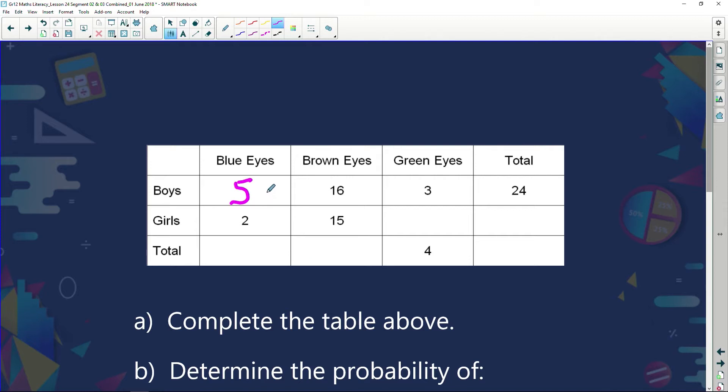At this column here we got 5 boys who got blue eyes, 2 girls—that gives me a total of 7 of the students that we looked at had blue eyes. Over here, brown eyes: 16 boys had brown eyes, 15 girls had brown eyes, a total of 31 had brown eyes. Green eyes: 3 boys. How many girls? A total of 4 means 1 girl had green eyes.